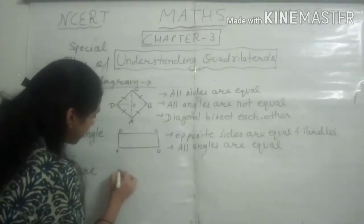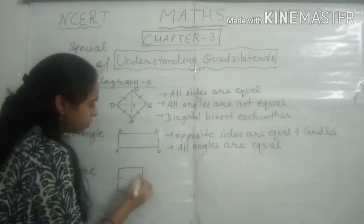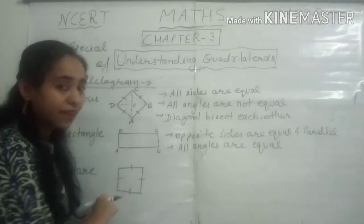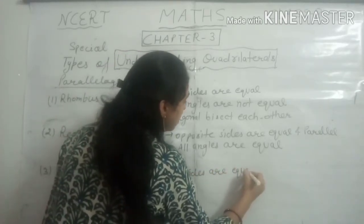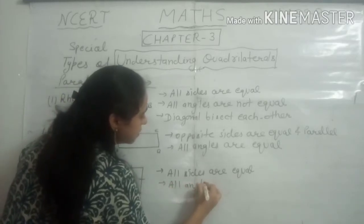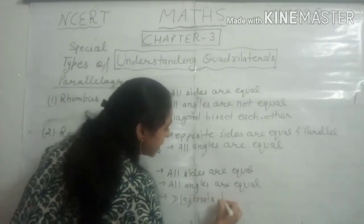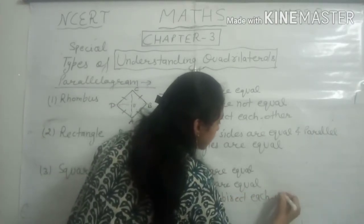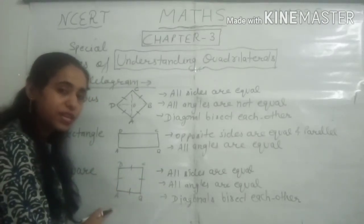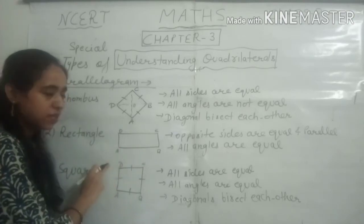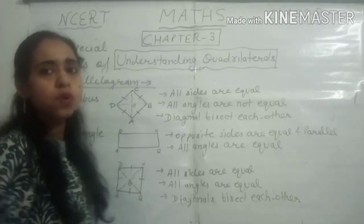The third special parallelogram is a square. In a square, all sides are equal and all angles are equal. The diagonals also bisect each other. For square ABCD: AB equals BC equals CD equals DA, angle A equals angle B equals angle C equals angle D, and if the diagonals intersect at O, then AO equals OC and BO equals OD.